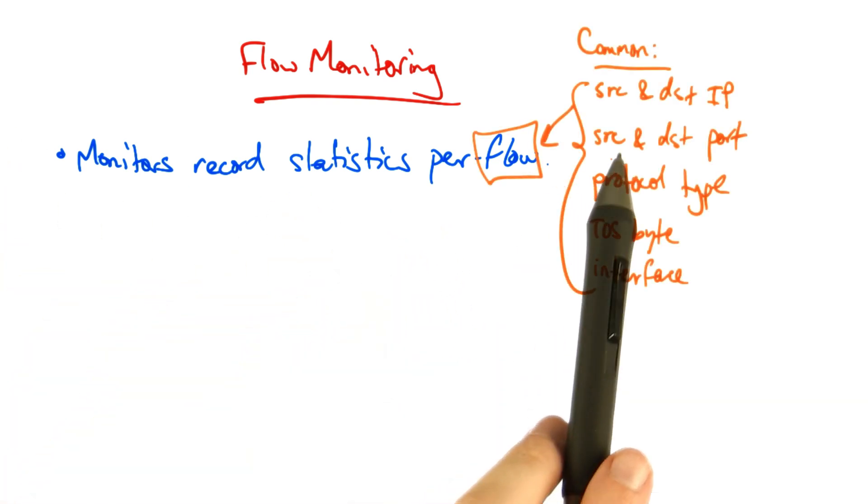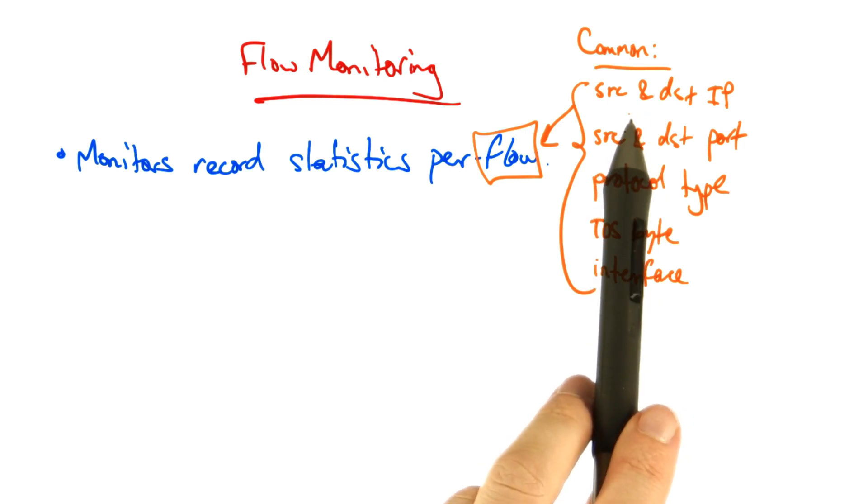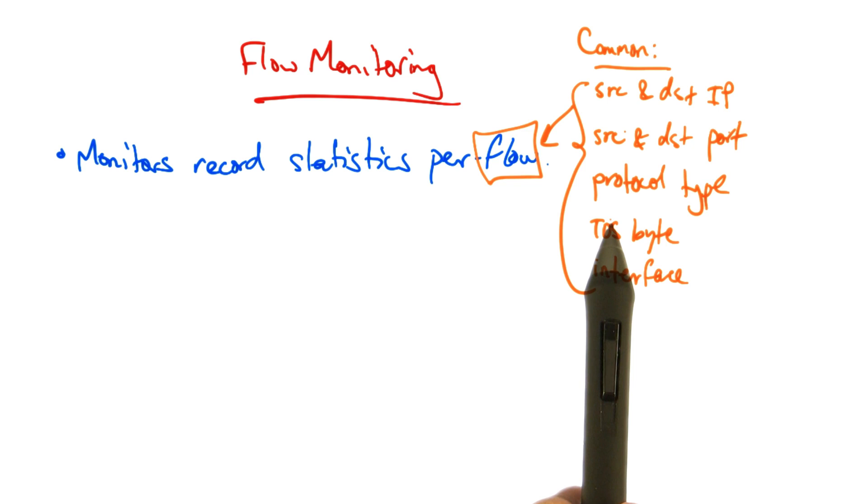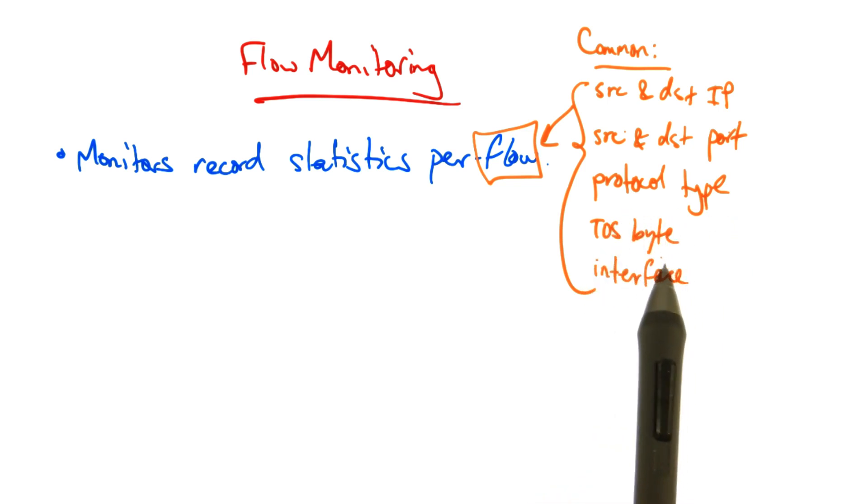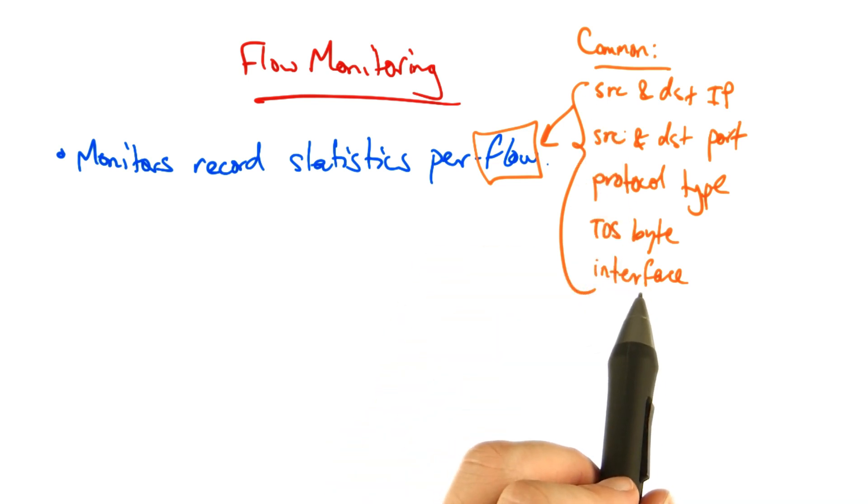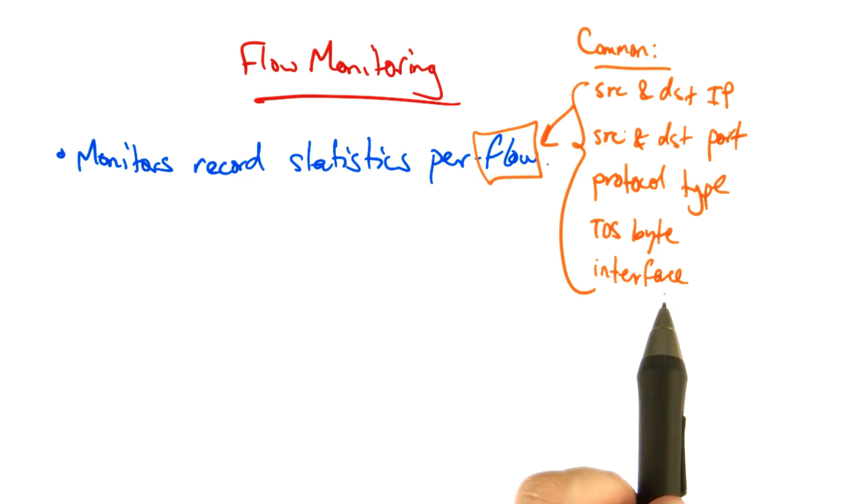A flow consists of packets that share a common source and destination IP address, source and destination port, protocol type, ToS byte, and interface on which the packets arrived. A flow monitor can then record statistics for a flow that's defined by the group of packets that share these features.